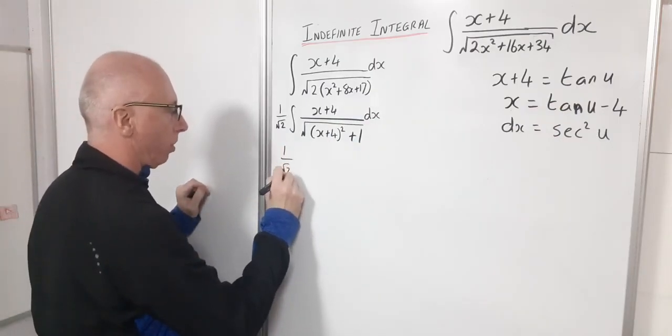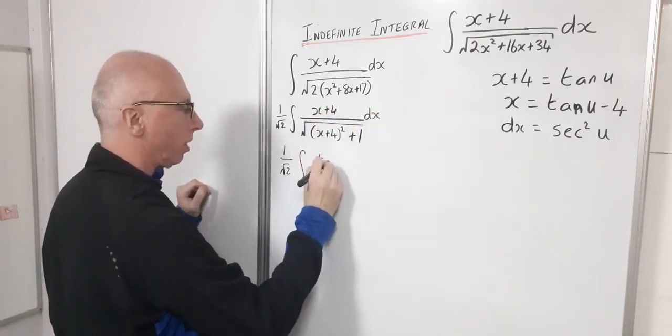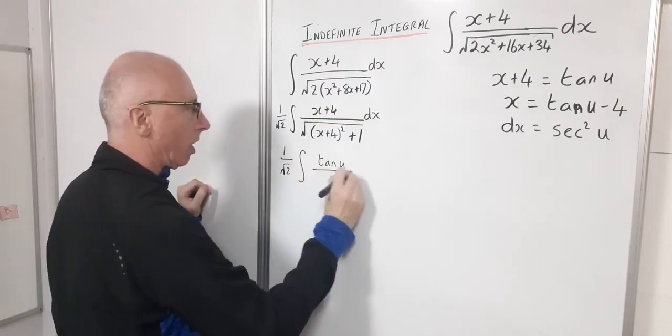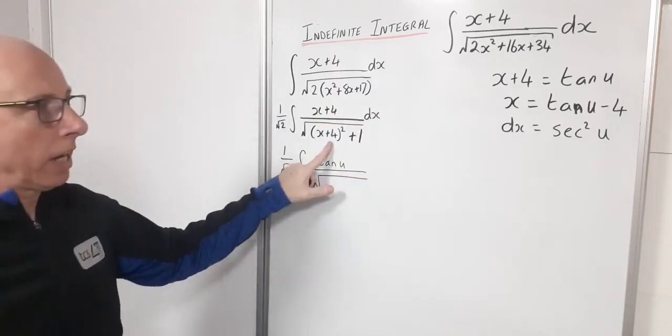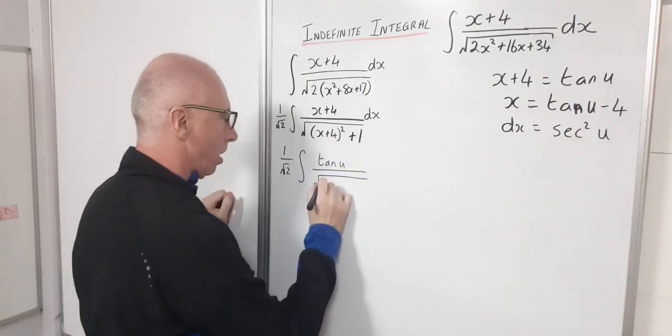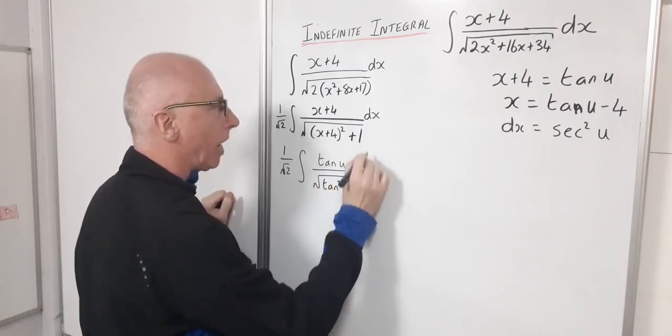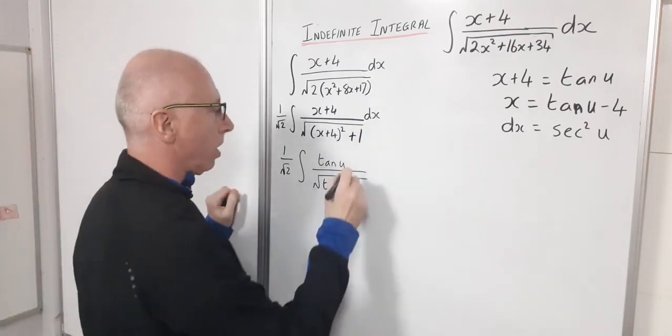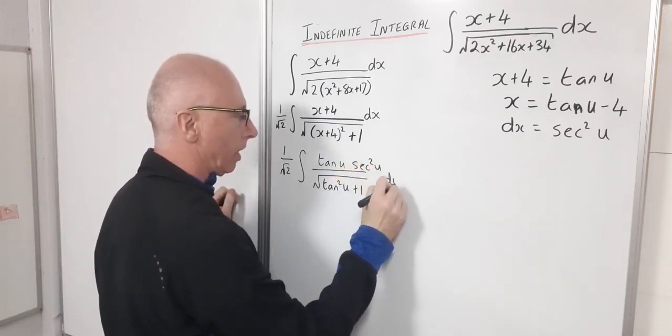So 1 over root 2 integral x plus 4 is tangent u. And then we got the radical there with x plus 4 squared which will be tangent squared u. So let's put that in. And then just the 1 and then my dx is sec squared u. So I'm going to just write that in the top there and then my du.